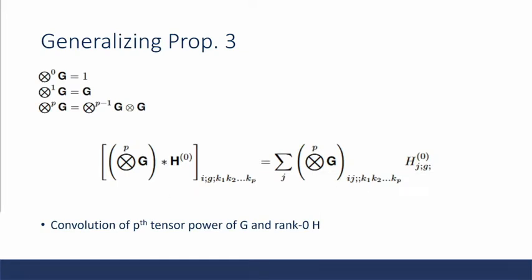In order to generalize our proposition to tensors higher than rank 2, we can simply solve this by using pth tensor powers of the iso-adjacency matrix with itself. And this allows us to use the property of equivariance with higher rank tensors.